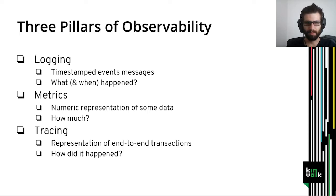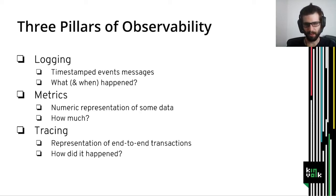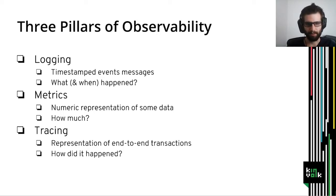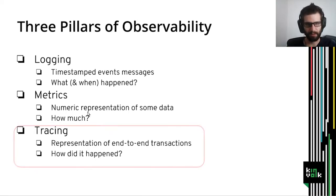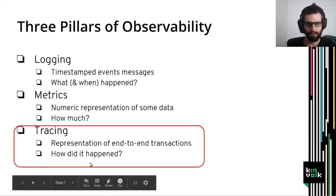Metrics are a numerical representation of some data. It allows us to answer the question: how much? Examples of metrics could be the number of users connected to a system, the quantity of RAM that an application is using, the speed of a transfer, and so on. Metrics are anything that you can represent numerically. Tracing is the last of these three pillars. Tracing is a representation of an end-to-end transaction, showing how a transaction is processed by all the systems from the beginning to the end.